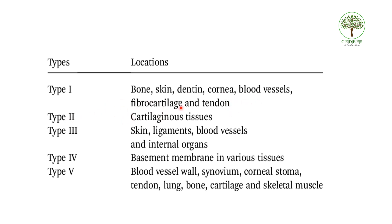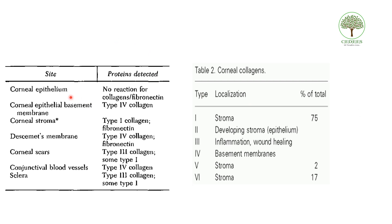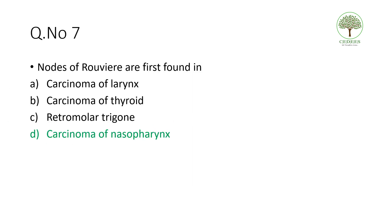Type 2 collagen is in cartilaginous tissue. Type 3 is mainly in healing wounds or granulation tissue. Type 4 is in the basement membrane. The corneal stroma mainly contains type 1 collagen — 75%. So according to weightage, go for type 1. The Descemet's membrane is a basement membrane in the cornea below the endothelium and contains type 4 collagen. Majorly the answer is type 1; if asked specifically about the basement membrane, it is type 4.